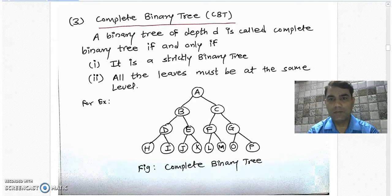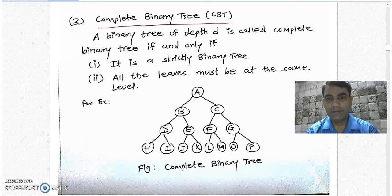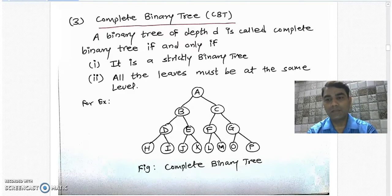Now we know what a complete binary tree is and the difference among strictly binary tree, almost complete binary tree, and complete binary tree. Now a question may be asked in the examination. It may happen that they give the depth of the tree and ask you to find the total number of leaf nodes, total number of non-leaf nodes, and total number of nodes in the complete binary tree.